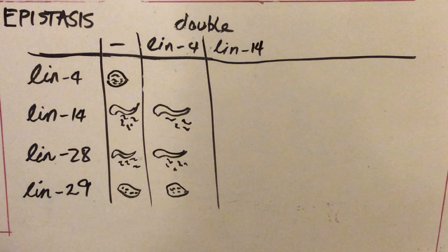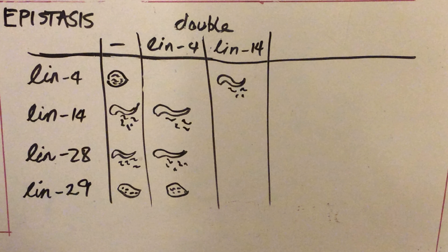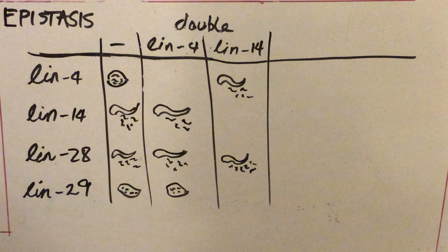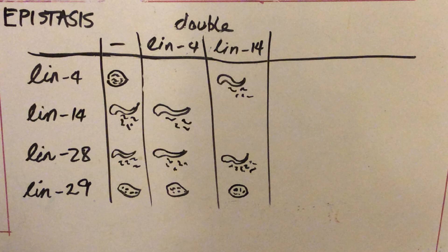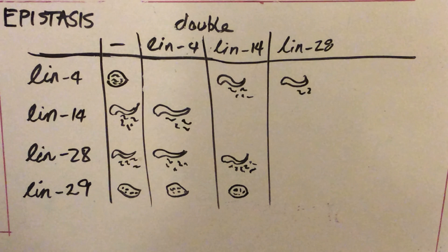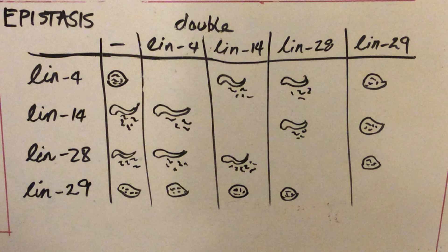Now we'll do the test with LIN14. LIN14 in the reverse combination is still epistatic to LIN4, as is LIN28. Going on to the LIN29/LIN14 double, which looks just like LIN29 — this means that LIN29 is epistatic to LIN14. Likewise, LIN29 is also epistatic to LIN28.